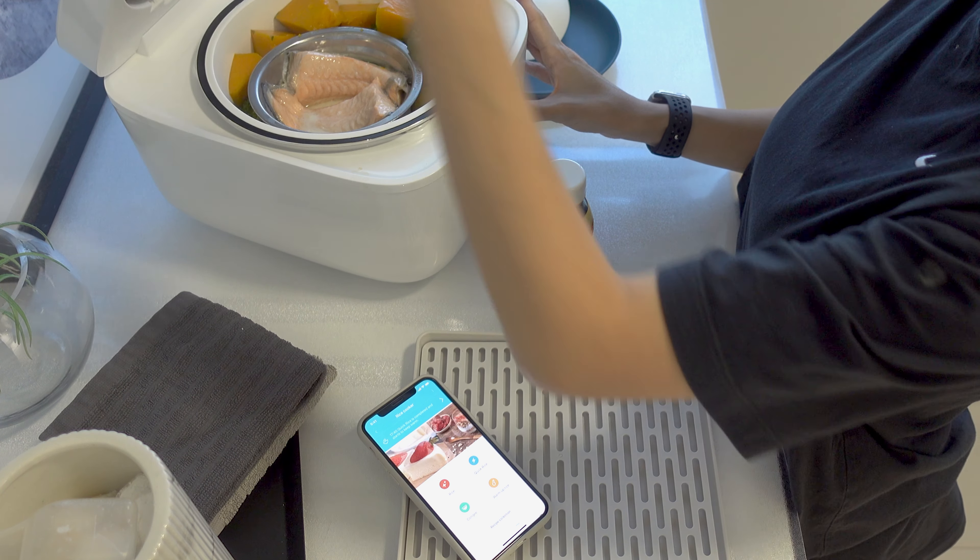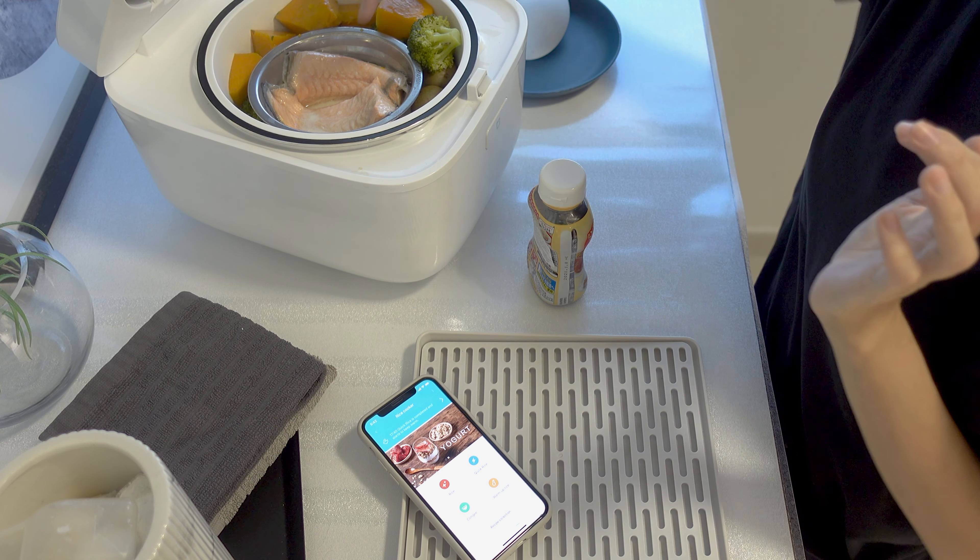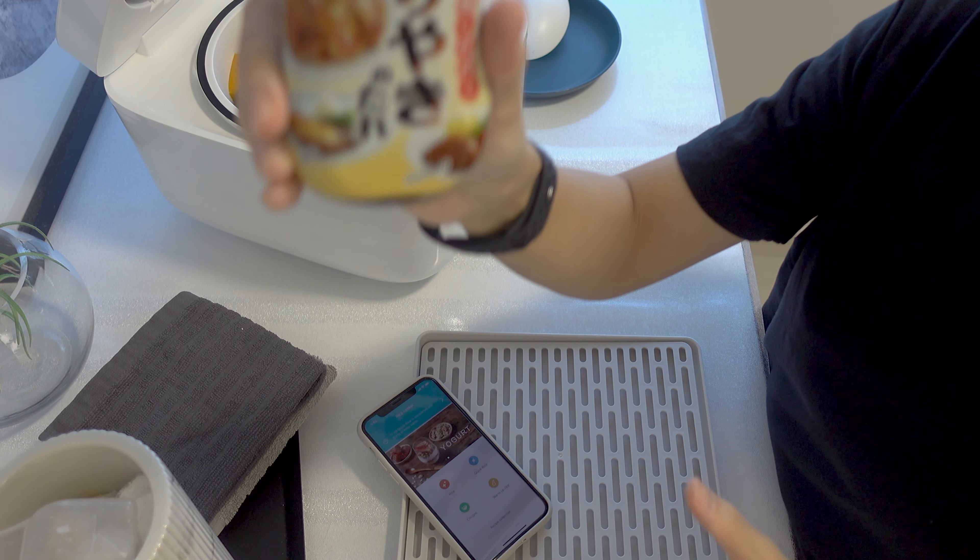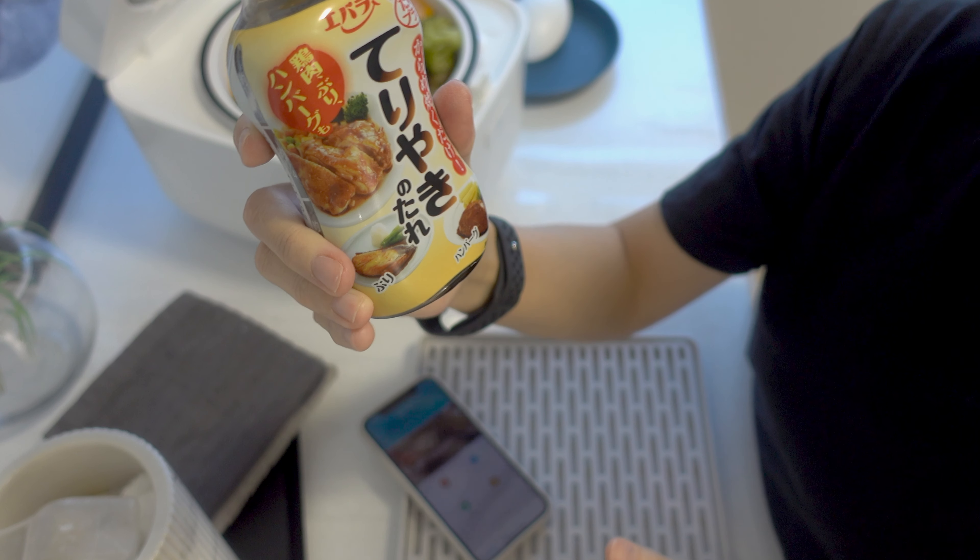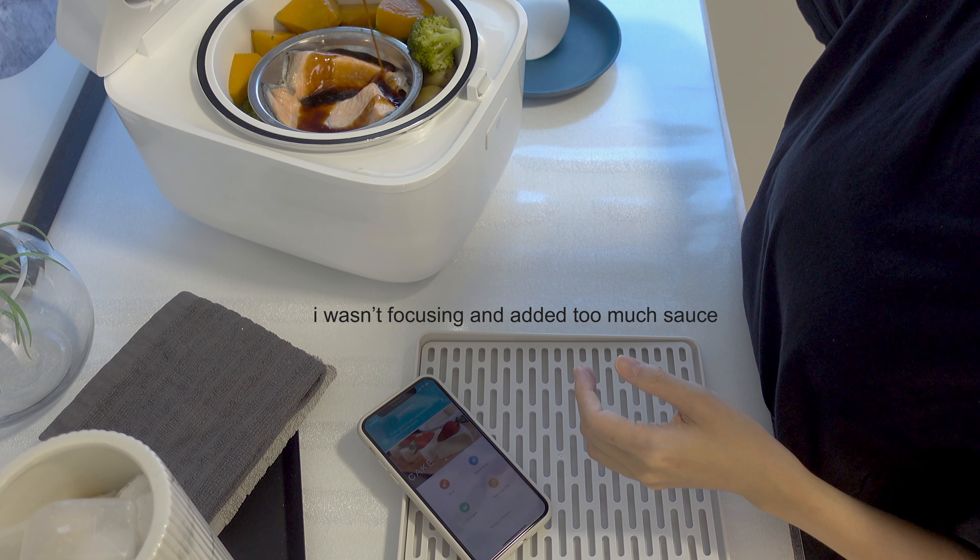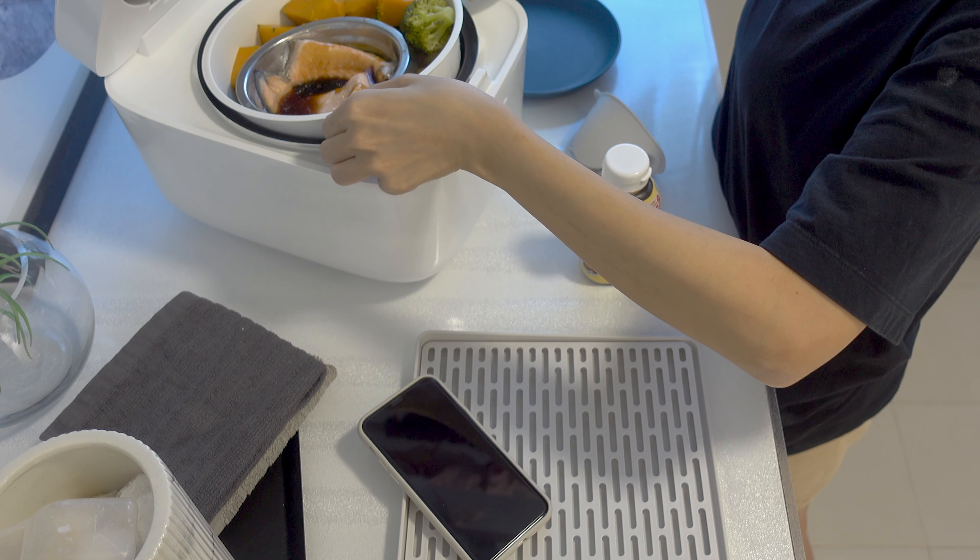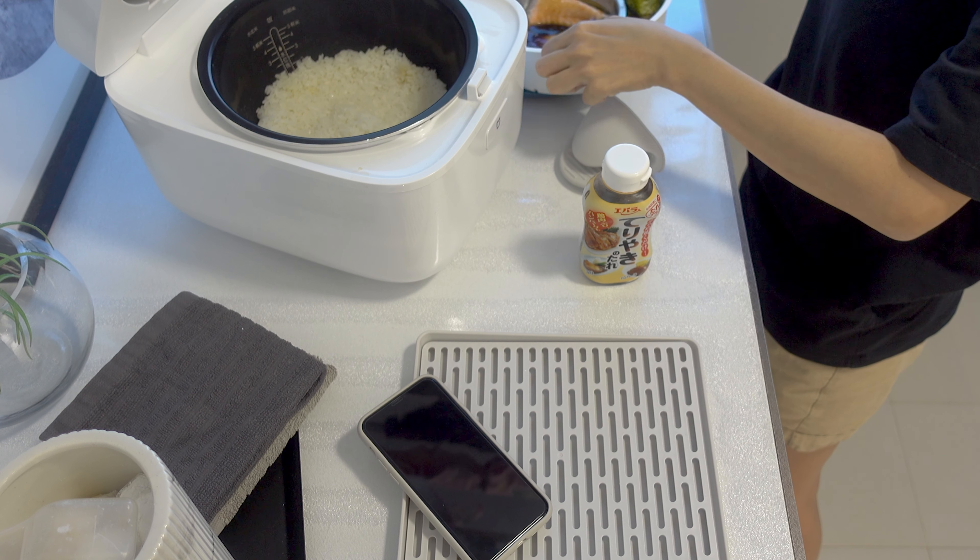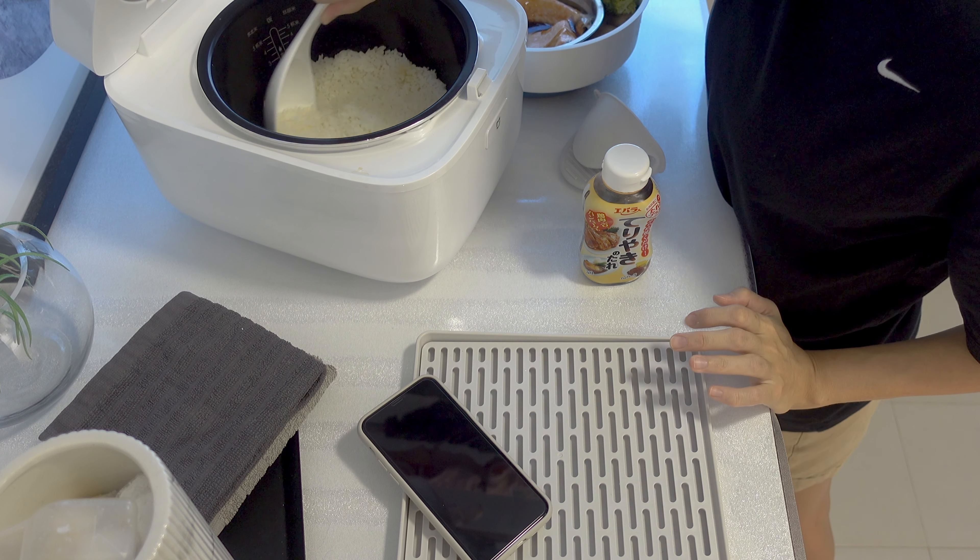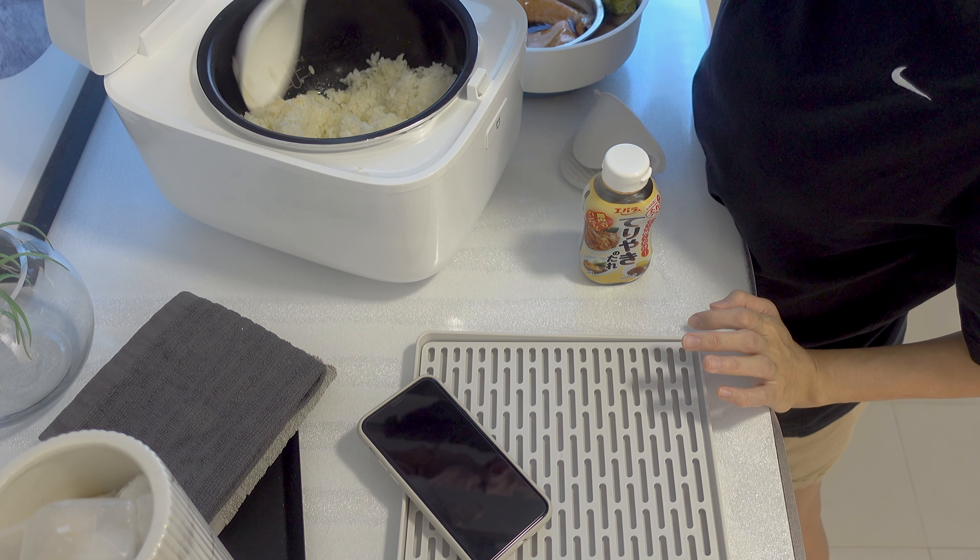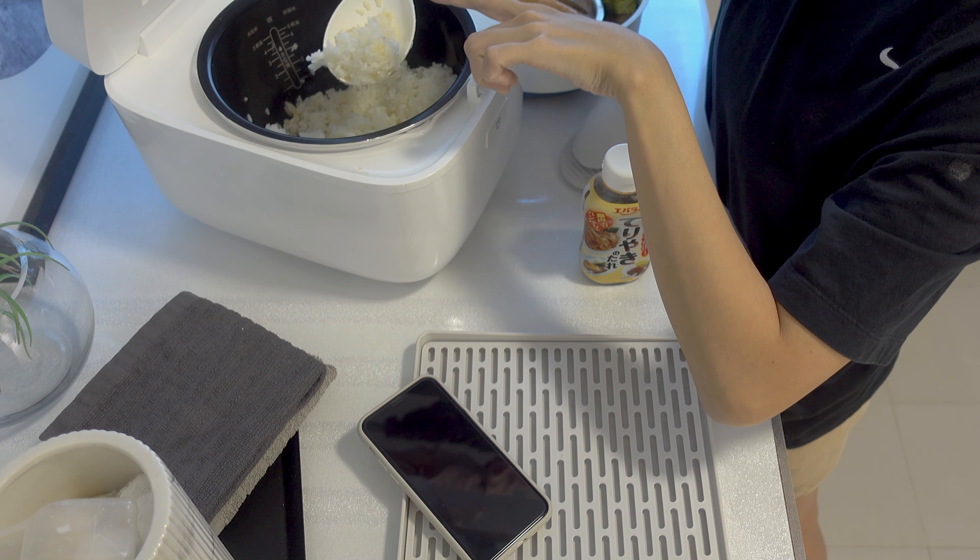So this is how it looks like. Just now I put in the salmon, right now it's cooked, and what I like to do is I have this teriyaki sauce, the thick kind, so I just like to pour it in. So this is the rice, it has a little bit of orange color from the pumpkin.